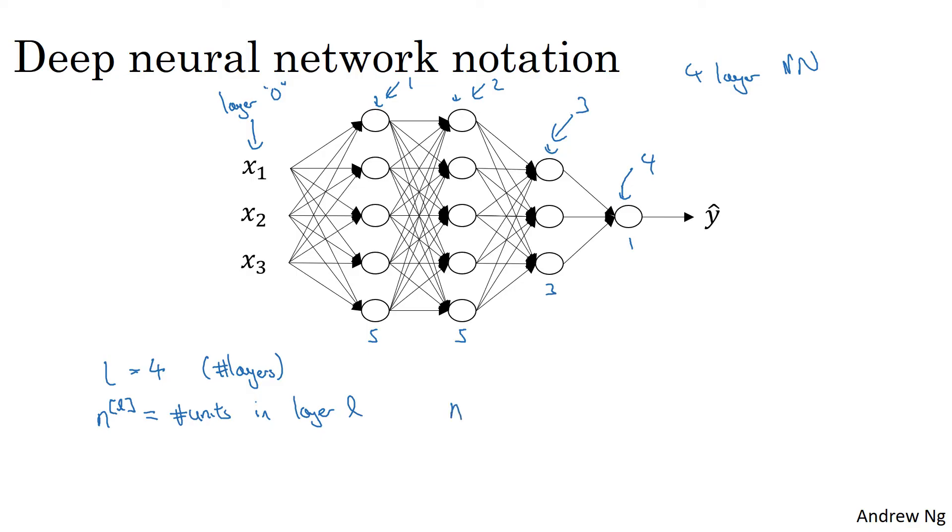Then we have that, for example, N^1, that would be the first hidden layer, would be equal to five because we have five hidden units there. N^2, the second hidden layer, is also equal to five. N^3 is equal to three, and N^4, which is N^L, the number of output units, is equal to one because here capital L is equal to four. And we're also going to have here that for the input layer, N^0 is just equal to Nx, which is equal to three.